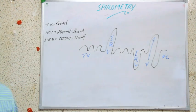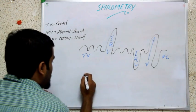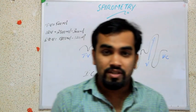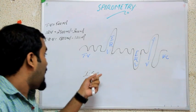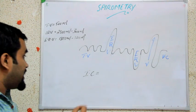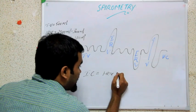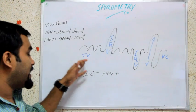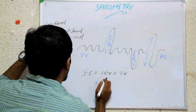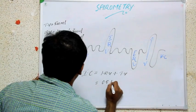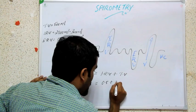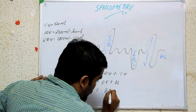Now, what is inspiratory capacity? Capacity is always a sum. Inspiratory capacity is the sum of IRV plus TV. That is 3 liter plus 0.5 liter, which equals around 3.5 liter.